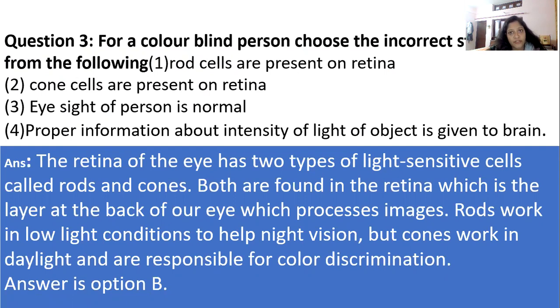For color blind person choose the incorrect statement from the following. Option number two is the answer for this question. As the retina of the eye has two types of light sensitive cells called rod cells and cone cells. Both are found in retina which is the layer at the back of our eye which processes images. Rods work in low light condition to help night vision but cones work in daylight and are responsible for color discrimination. Option B is right for this question.